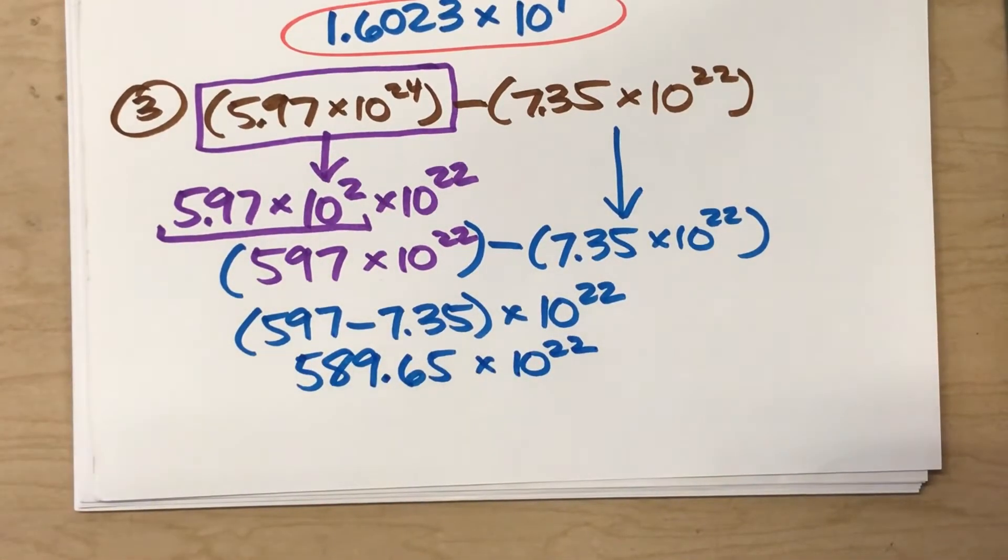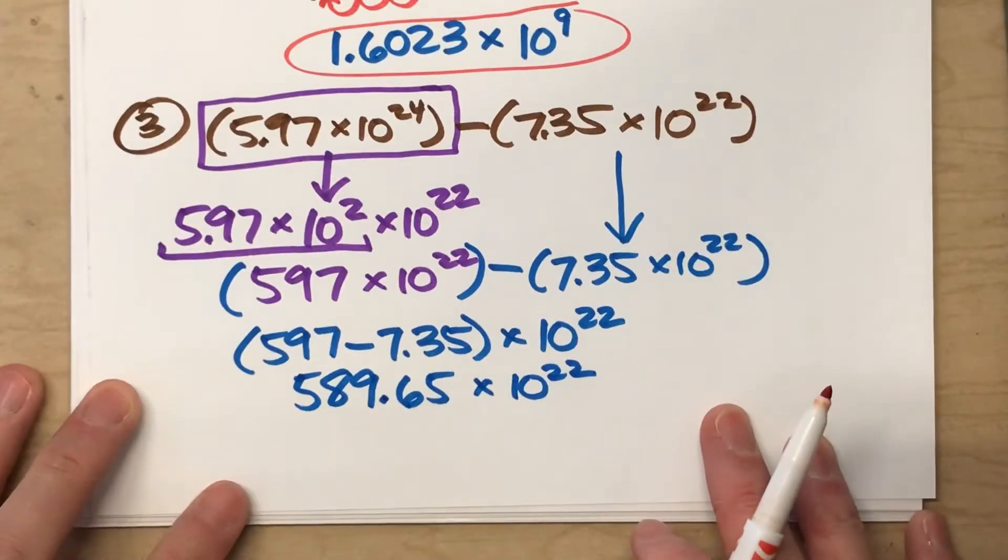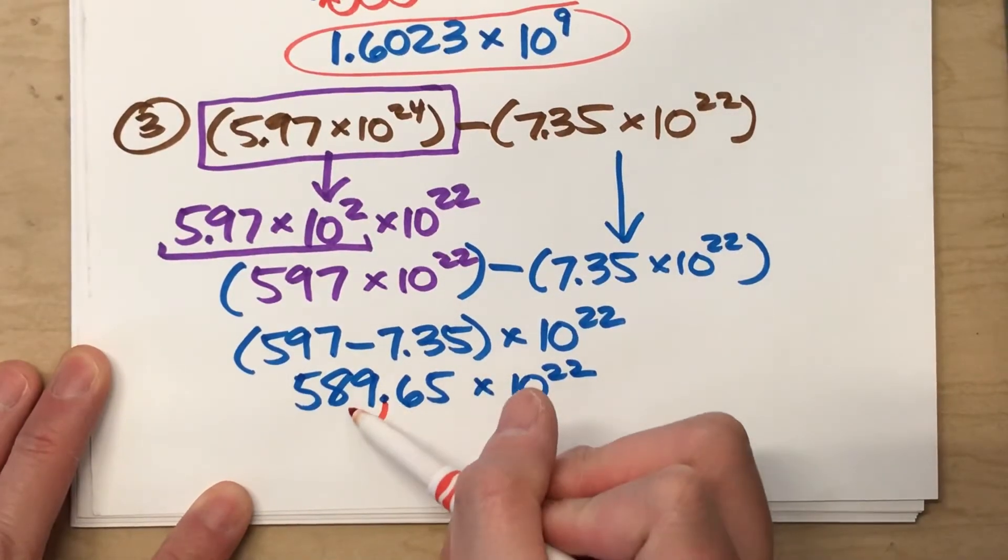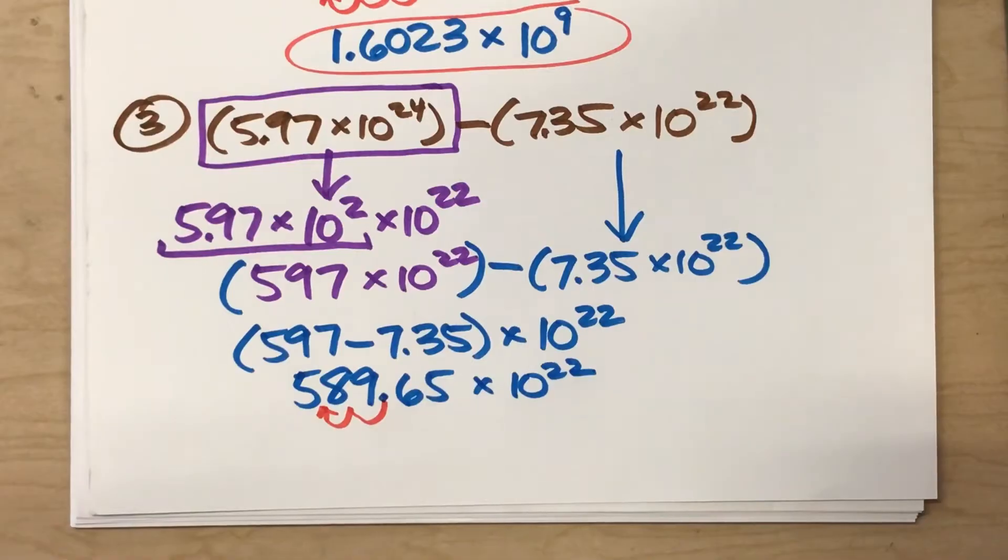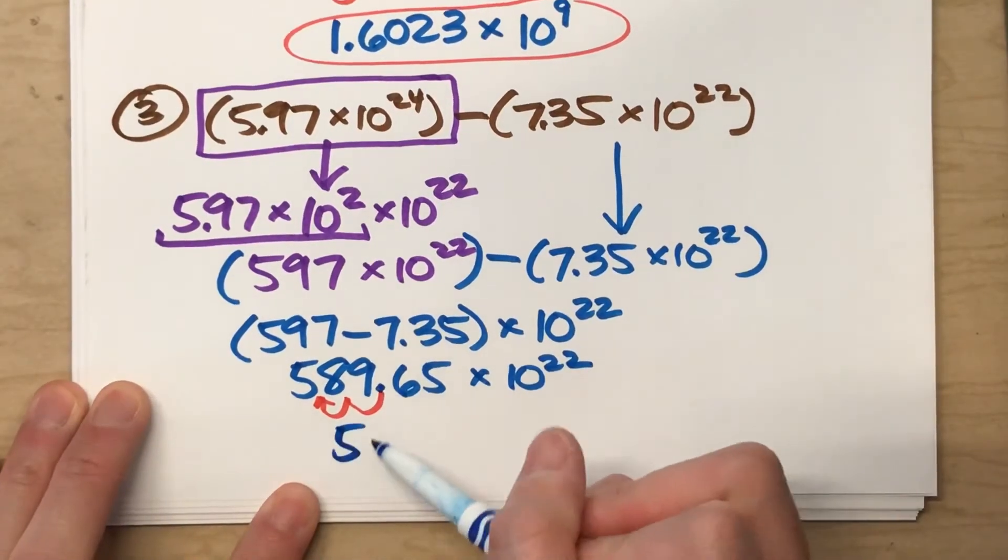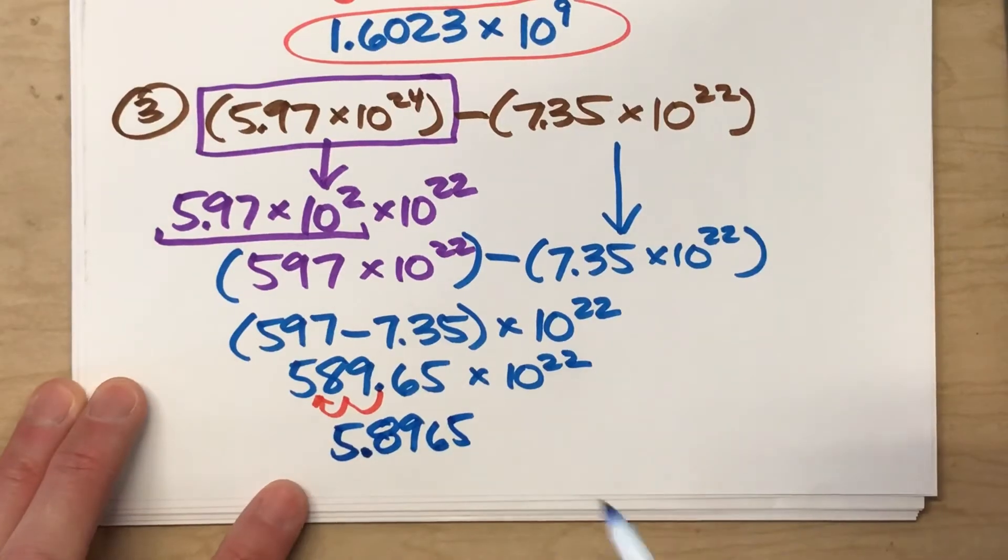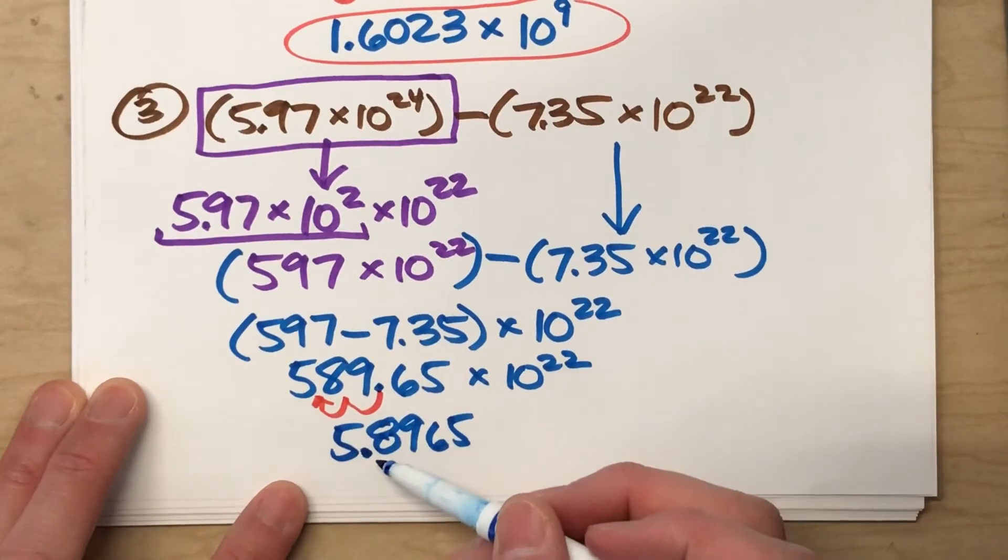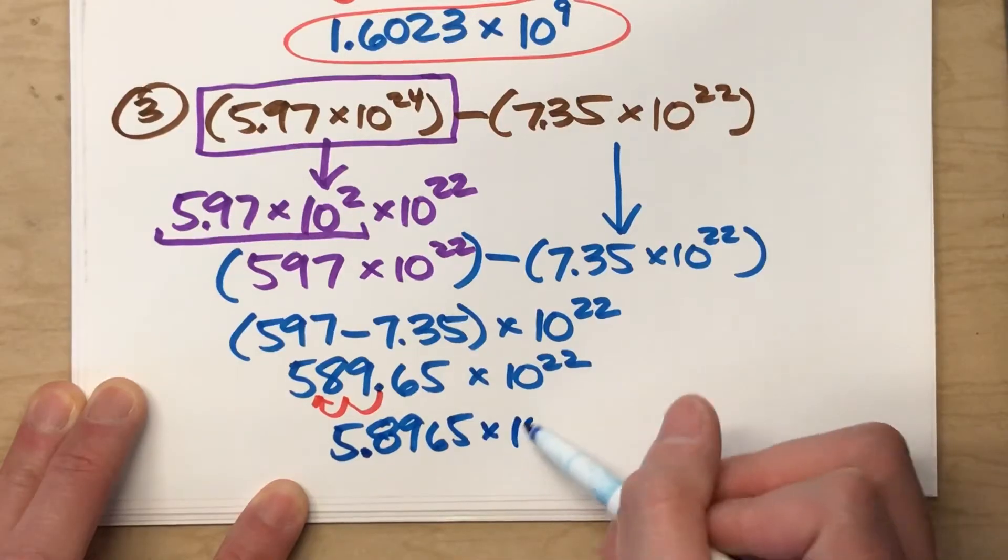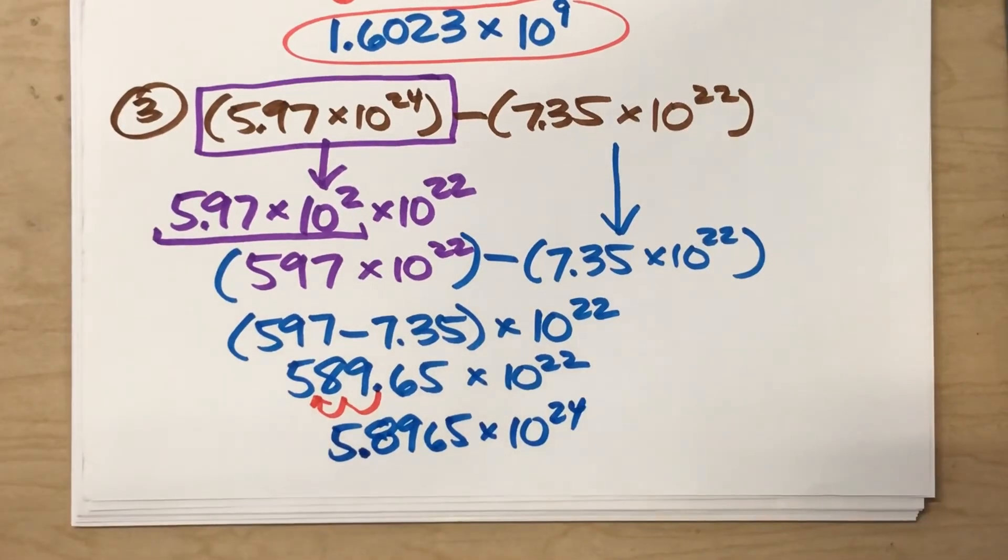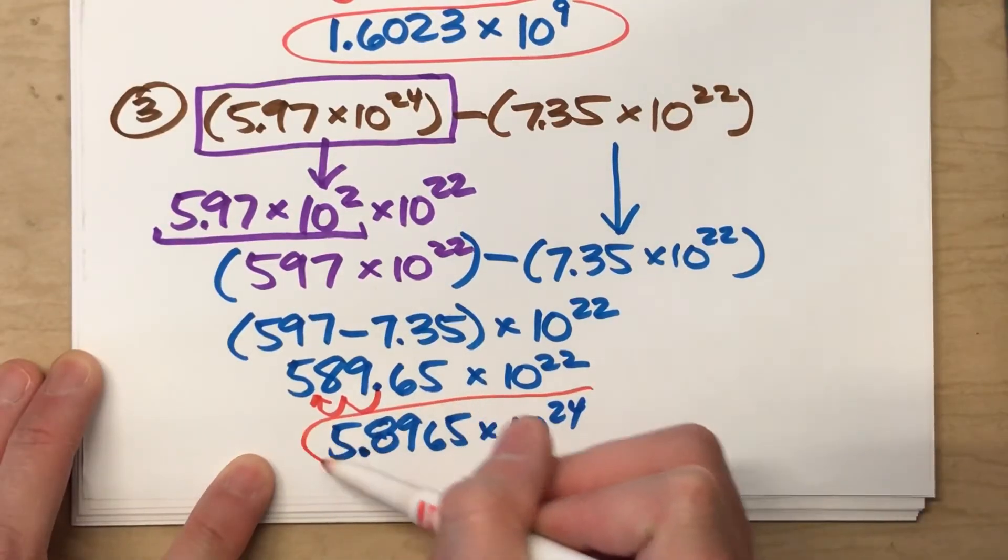I'm almost done. But again, it's not in scientific notation. I need to move that decimal over two spots and make this 5.8965. But since I made this smaller by two decimal places, I need to make the power of 10 bigger by two decimal places. So that is my final answer in scientific notation.